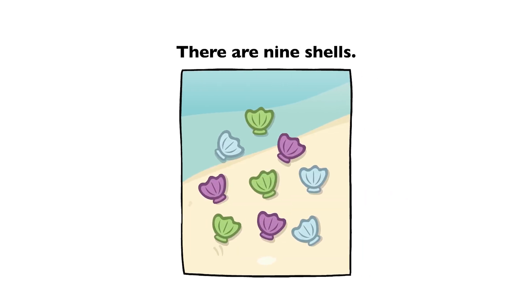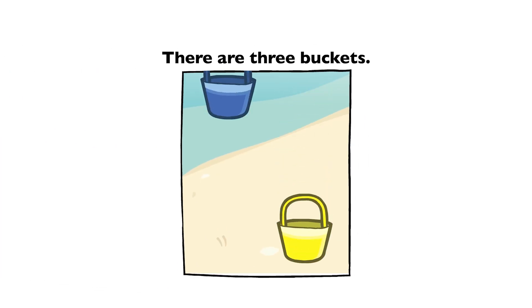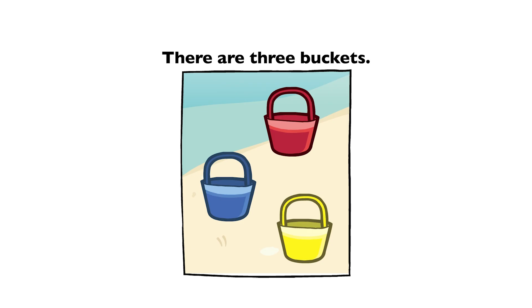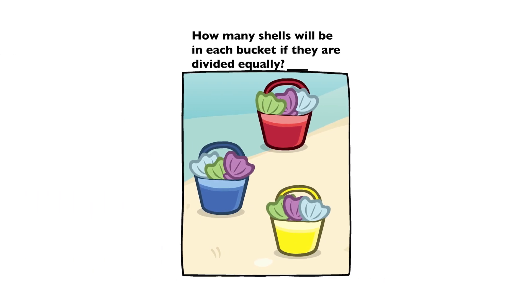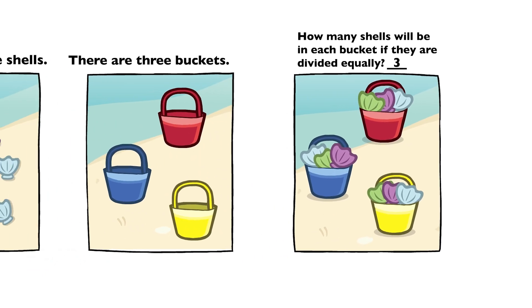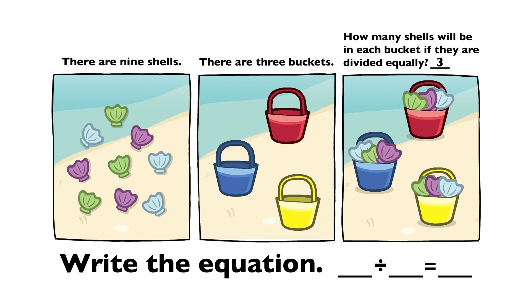There are nine shells. There are three buckets. How many shells will be in each bucket if they are divided equally? 3. 9 divided by three equals three.